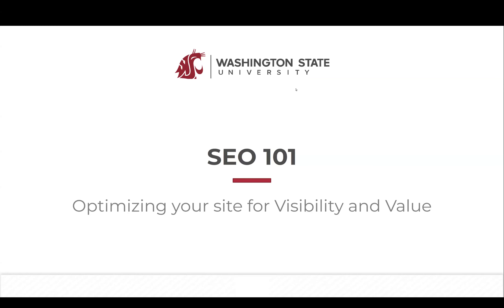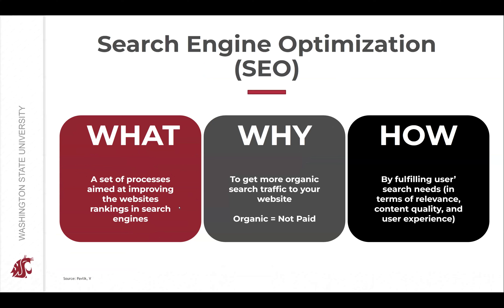SEO — search engine optimization — is a set of processes aimed at improving a website's visibility in search engines. The common ones out there are Google and Bing, and it's with the goal of getting more organic traffic. You optimize your site for search engines by fulfilling users' search needs by creating relevant and high-quality content and providing the best possible user experience.